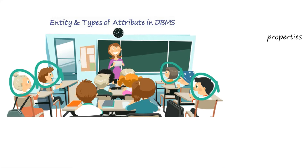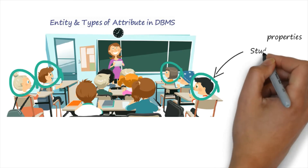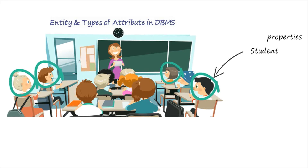A student may have many properties like name, age, height, and roll number. These are the properties which will help us to identify a specific student. A real-world property of an entity is known as an Attribute. An Entity means the object that exists in the real world — so here, student is an Entity, and the properties that define a particular entity are known as Attributes.